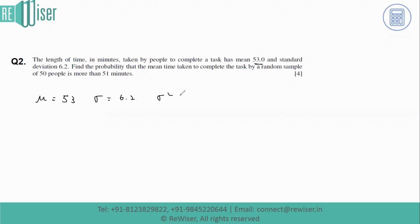The variance is 6.2 squared. Find the probability that the mean time taken to complete the task by a random sample of 50 people is more than 51 minutes.